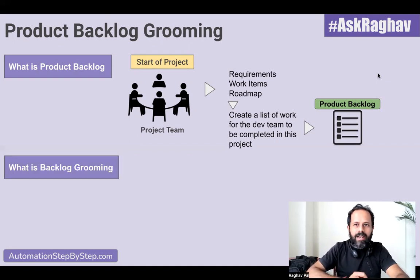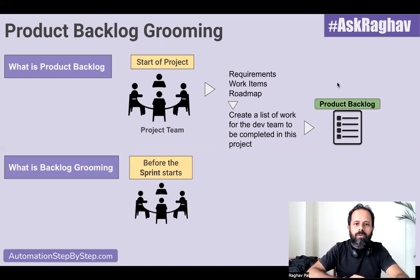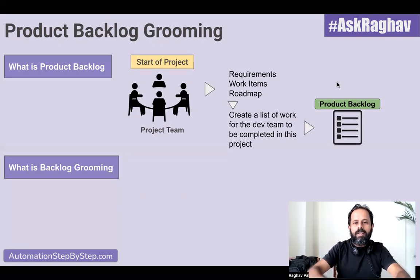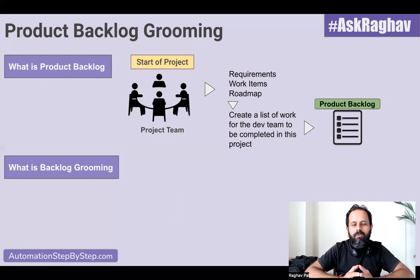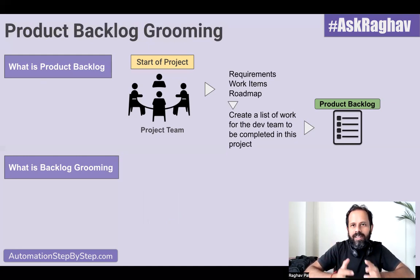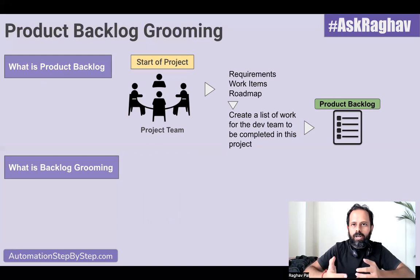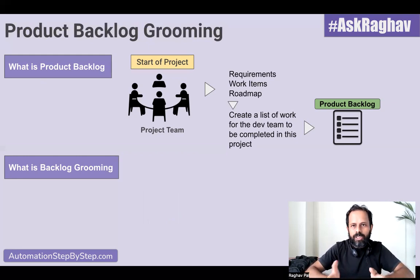Now what is backlog grooming? Before that, let us understand what is a sprint. In Agile methodology, we do not start the entire project all at once and then complete it in a single go. We divide the project and we have sprints. Sprints can be a duration of two to three weeks — it can be shorter or longer based on the project requirements and the team requirements — but generally a sprint is a time duration of two to three weeks.